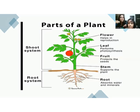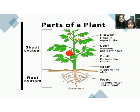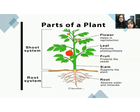The shoot system is the upper parts of a plant — that part of the plant which is present above the soil. In the shoot system, the parts we consider are stem, fruit, leaf, and flower. These parts are present above the soil and are considered as the shoot system.